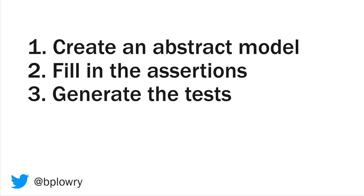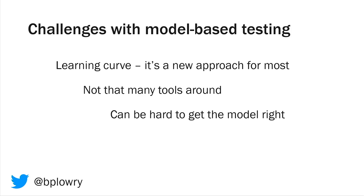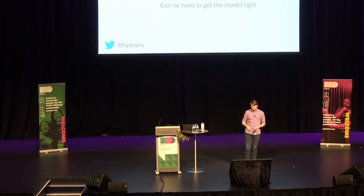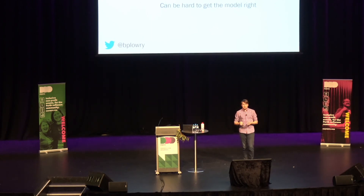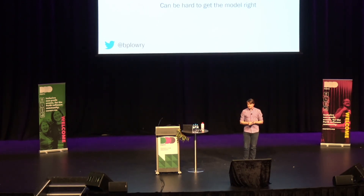And that's it — three steps: create an abstract model, fill in the assertions, generate the tests. Question mark, question mark, question mark, profit. Model-based testing does come with some challenges. There's a learning curve — it's a new approach for almost everyone in the room. There aren't that many tools around and some of the ones that exist are a bit old. And it can be hard to get the model right — as you saw, I modeled a stopwatch and still missed something. My suggestion would be to keep your model simple because they're easy to get right. You're not going to try to test your whole application, just parts of it. There's no such thing as a perfect model, only a useful one.